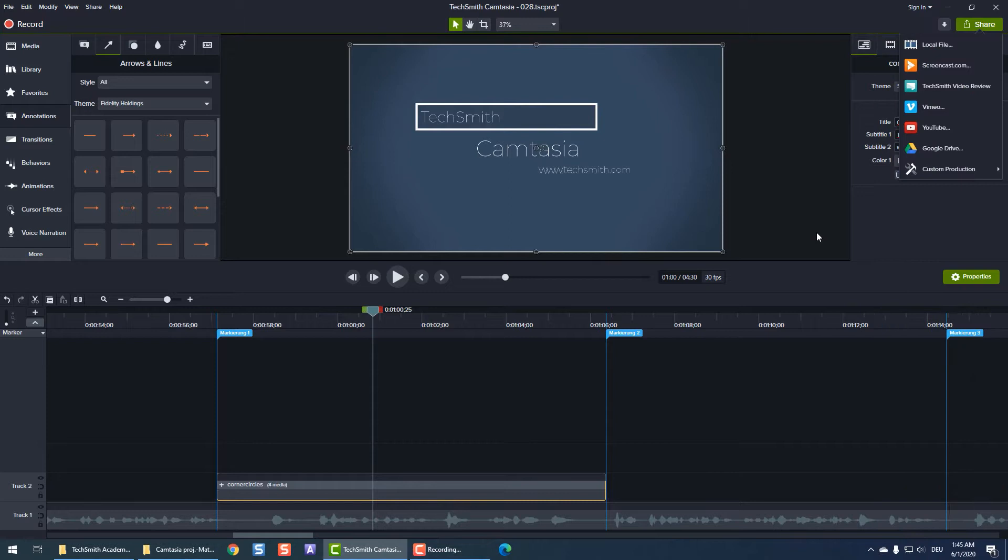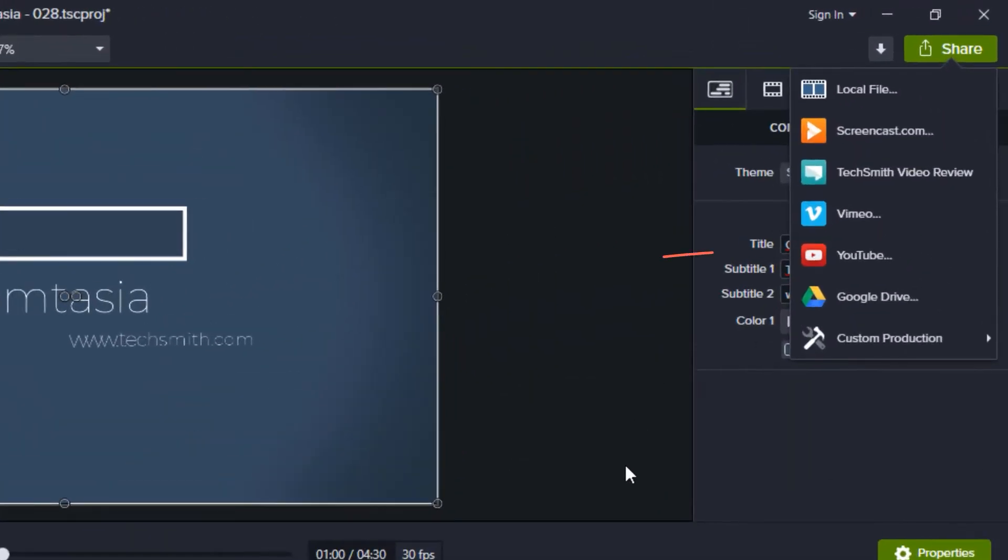It's important here again because you may find that your video editing program has an output that will send the video directly to that location. For instance, Camtasia allows output directly to YouTube, Vimeo, Screencast.com, and more.